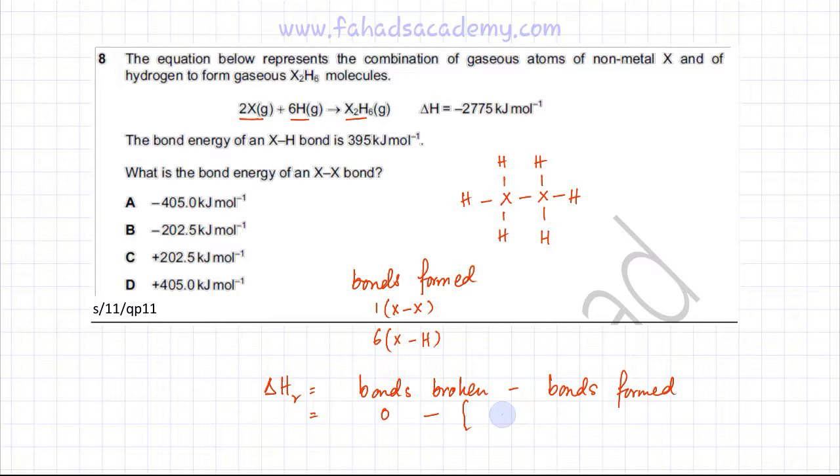So there's one bond of X-X that's being formed and there are six bonds of X-H being formed and the energy is given. It's 395, so that is 395 times six. So the enthalpy change of the reaction would be equal to this.